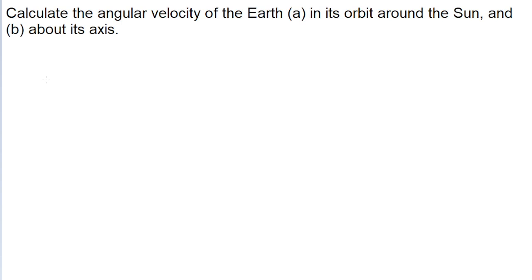This is a pretty simple problem where we're calculating the angular velocity of the Earth about the Sun and about its axis. Angular velocity, omega, is equal to the change in angle of a rotating body divided by the time interval.